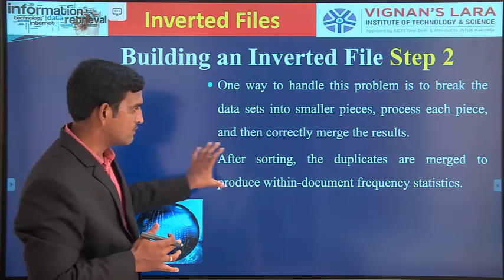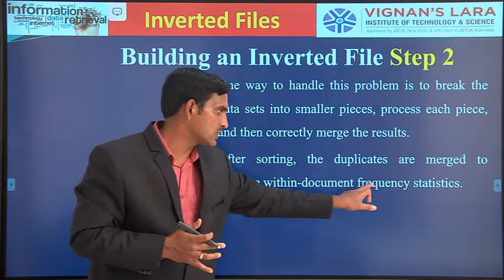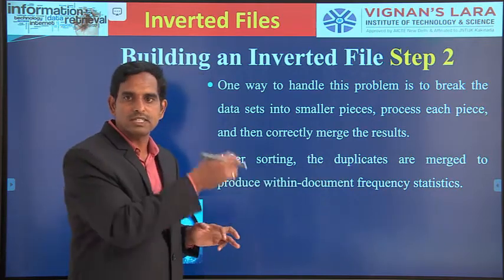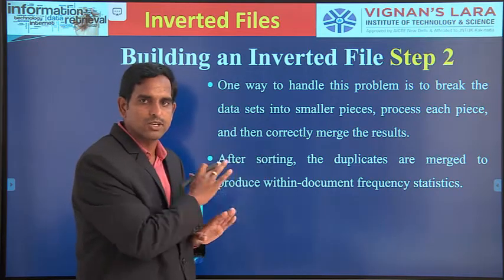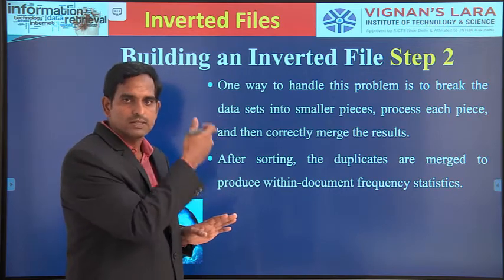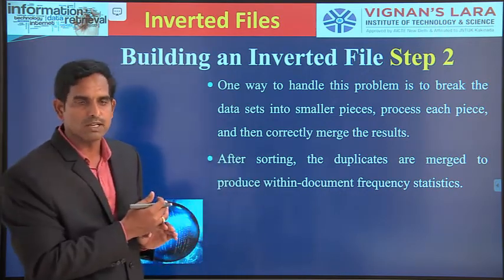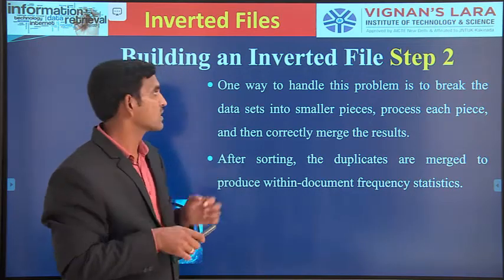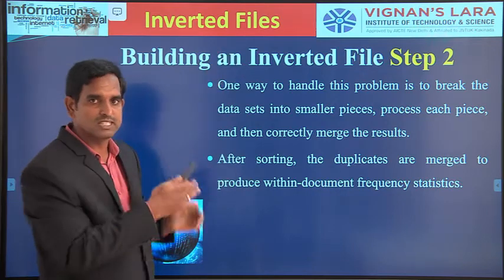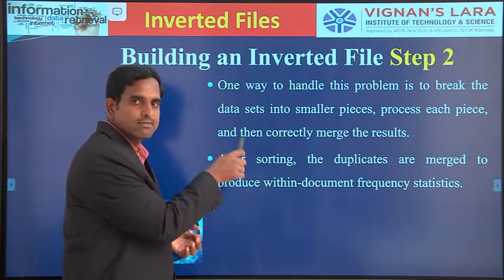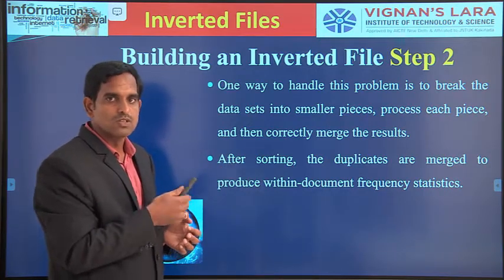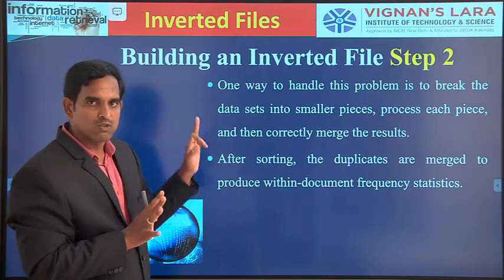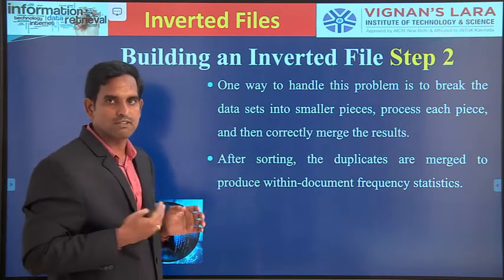After sorting, duplicates are merged to produce within-document frequency statistics. That is, within a particular document, how many times is the word present. For example, if 'inverted' appears multiple times in a document, we track its frequency. If the word is present in two different documents, it will not be merged; if it is present in the same document, it will be merged with a frequency count greater than one.